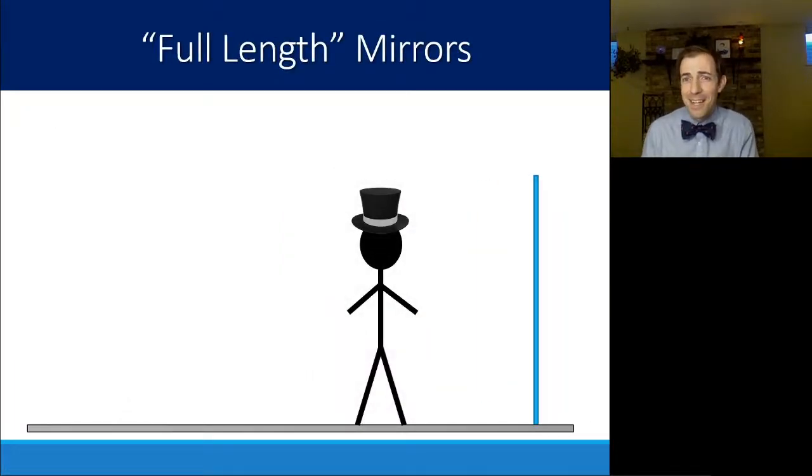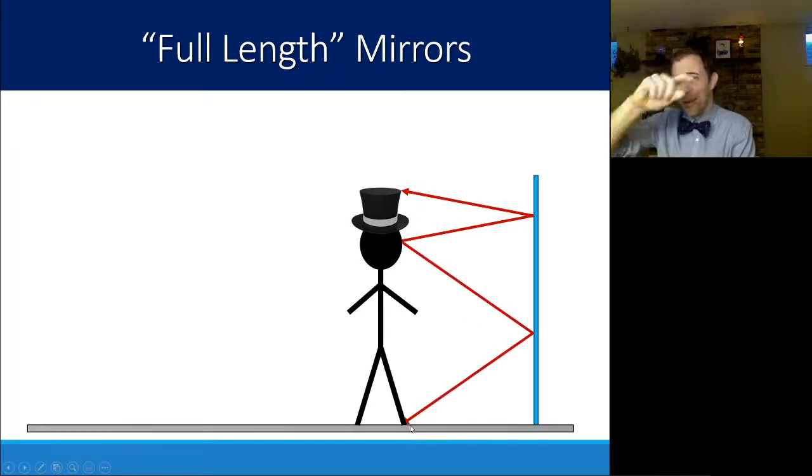Another side effect of this that I think is really fascinating is a full-length mirror doesn't actually have to be full length. When I say full length, I mean a mirror that you can see your entire body when you're standing in. It does not have to be the same height as your entire body. If I was standing here and wanted to see the top of my top hat, I would just need to look at a point on the mirror that's halfway between my eye and my top hat. Because it will bounce, that angle will be equal, and will bisect that total distance. And the same thing with my feet.